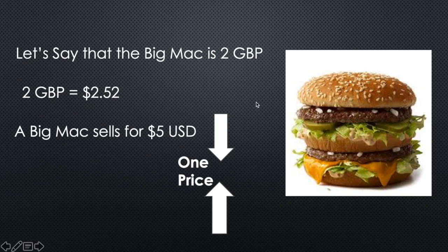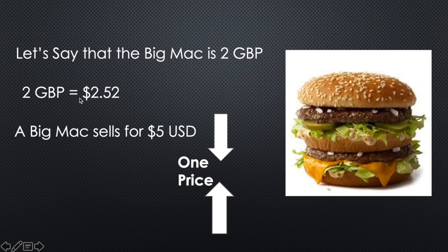So let's talk about the principle of arbitrage. We're going to talk about the Big Mac as our product. These numbers are just examples — they're not actually real-life numbers. Let's say the Big Mac is worth 2 Great British pounds. So if I go to a McDonald's in Great Britain and buy a Big Mac, I can buy it for 2 Great British pounds, which is worth $2.52. Here in the United States, a Big Mac sells for 5 US dollars.